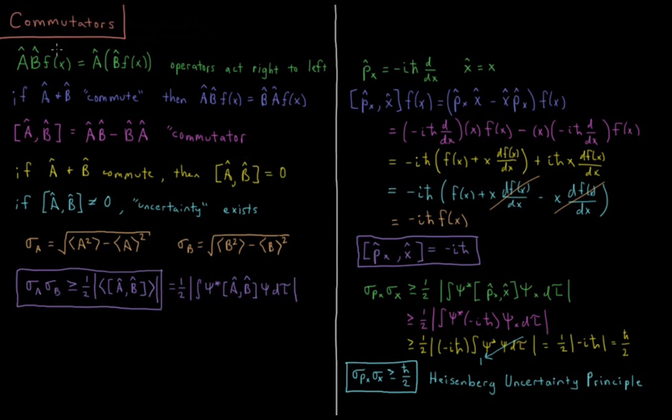first B is going to act on f, so that happens inside parentheses here. B acts on f, we generate a new function, say g of x, and then A acts on the new function, and then generates another new function, perhaps h of x.